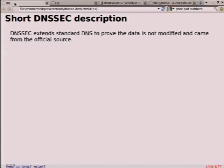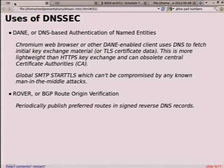The very quick description: DNSSEC extends standard DNS and proves that the data is not modified and came from the official source. Before we get into setting up DNSSEC, we'll talk about some other use cases. DANE — DNS-based authentication of named entities — some clients, and there have been patches for Chromium already, can use DNS to fetch initial keying information. This is something to replace certificate authorities, more lightweight than the regular HTTPS key exchange.